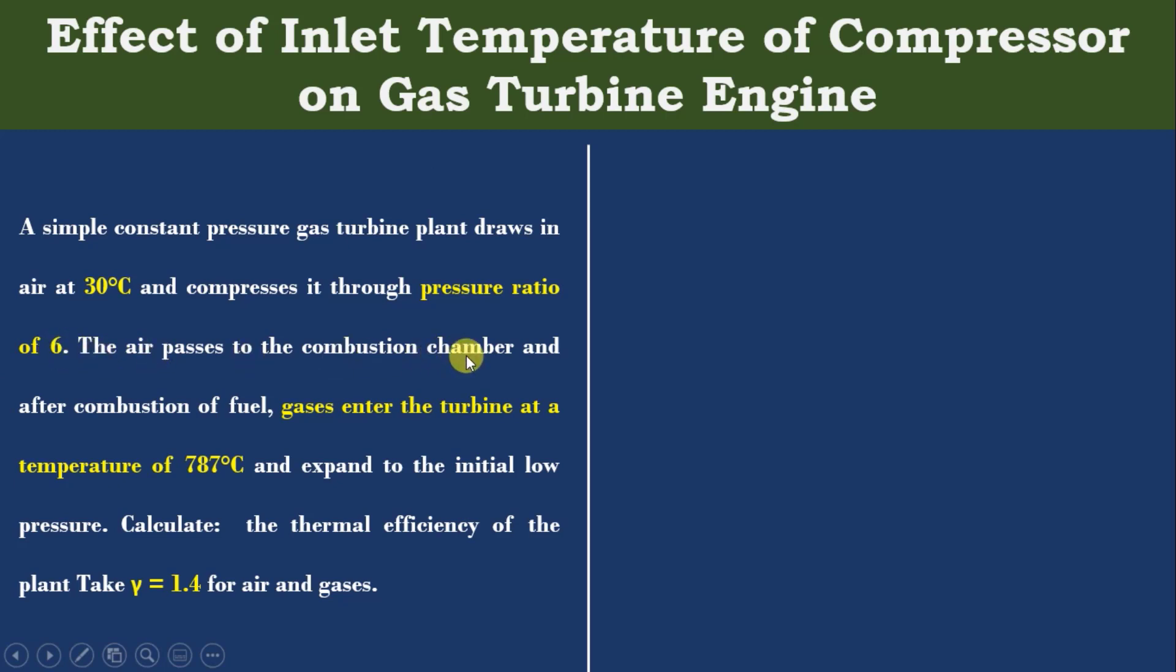Then the air passes through the combustion chamber, and after combustion of fuel, gases enter the turbine at a temperature of 787 degrees Celsius and expand to the initial low pressure. Calculate thermal efficiency. Take gamma equals 1.4.